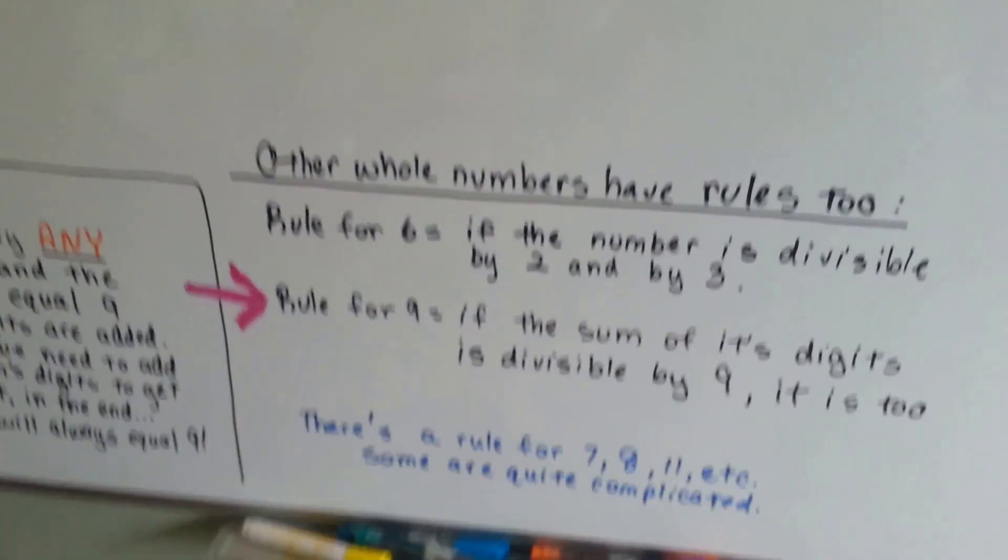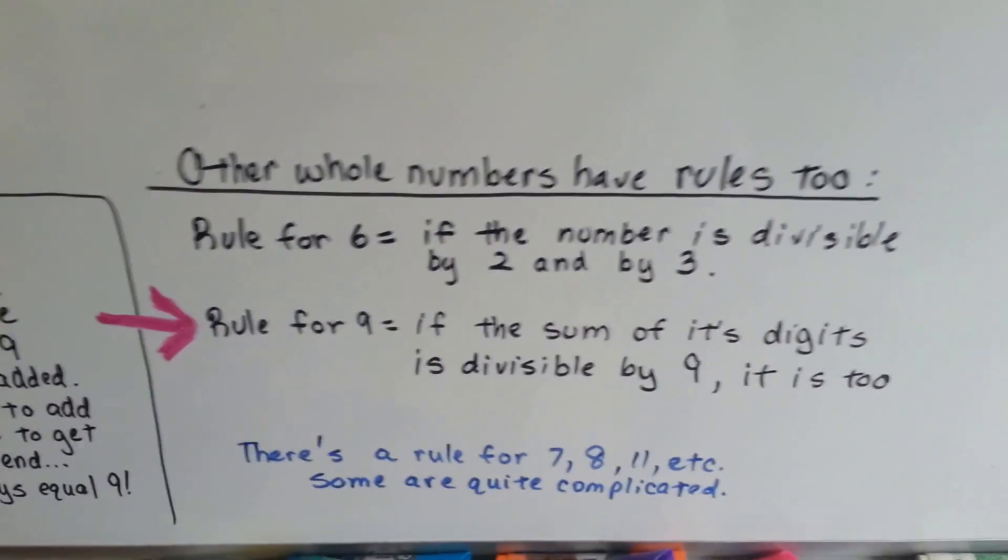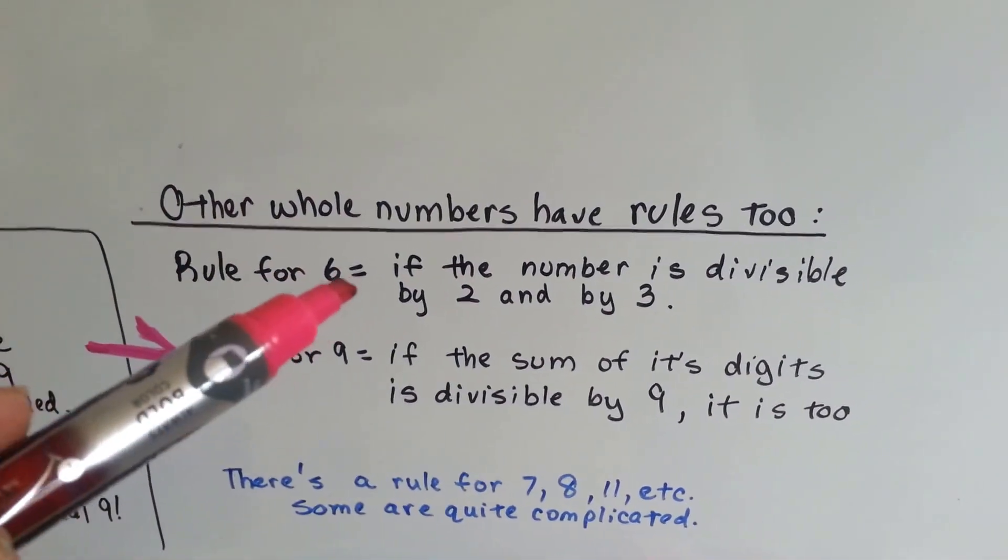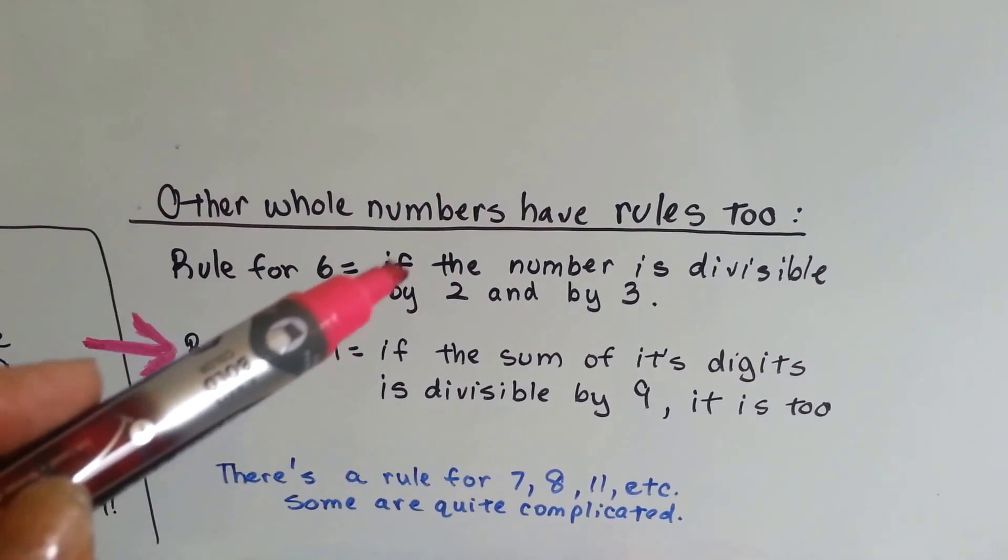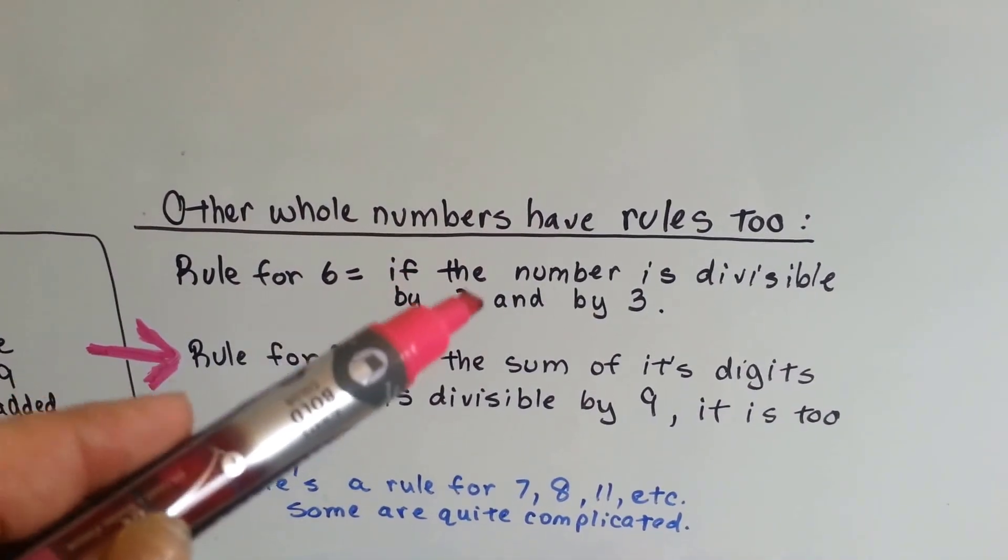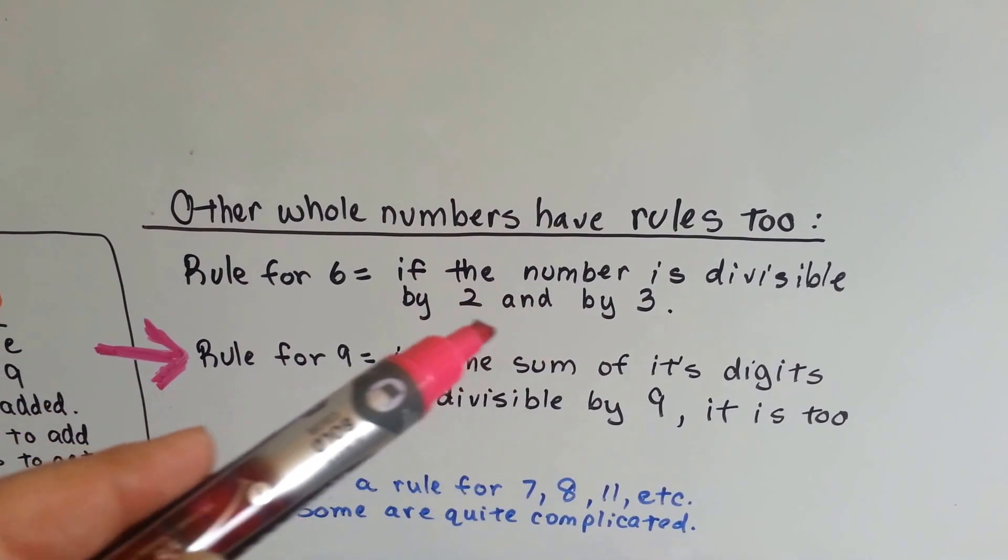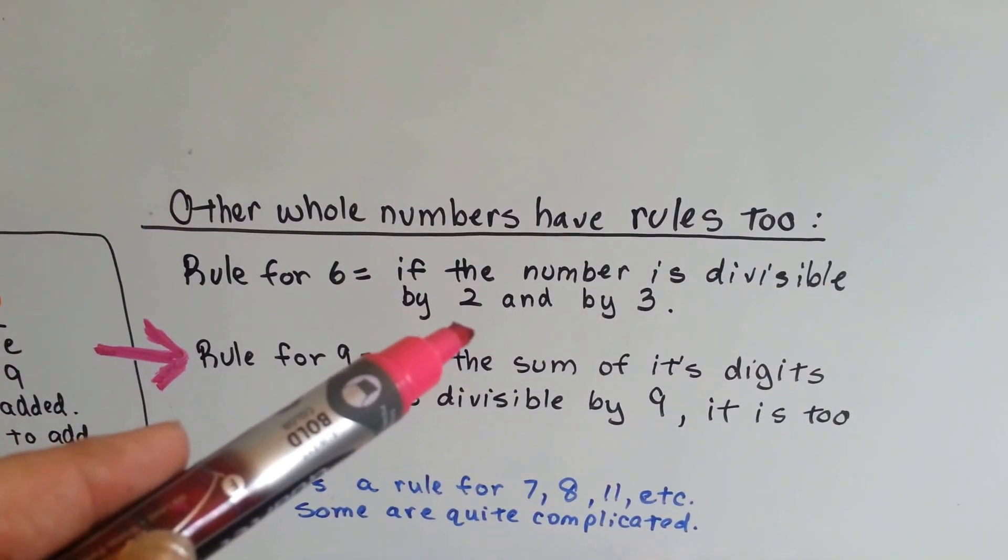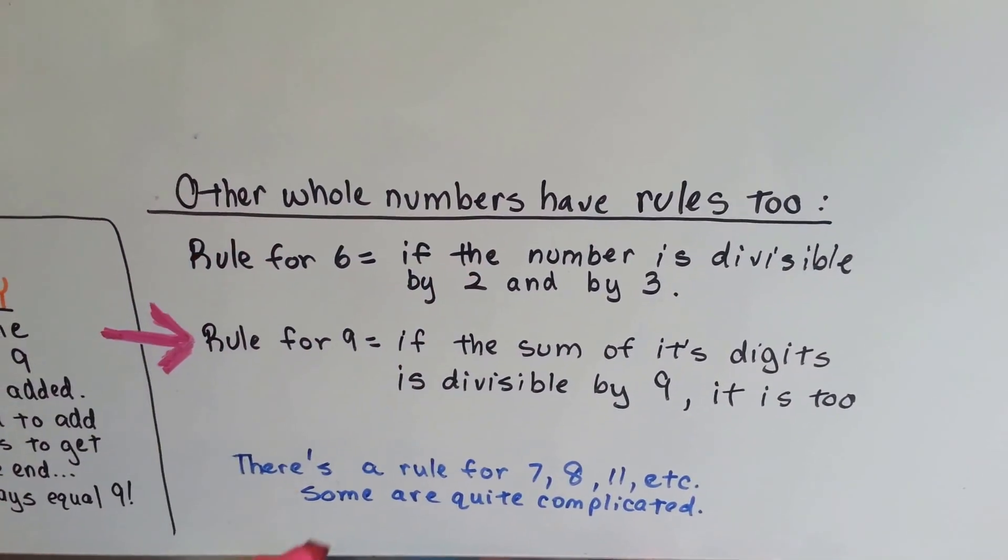So let me show you. There are other whole numbers that have rules too. The rule for 6 is it's divisible by 6 if the number is divisible by 2 and by 3, not or. If it's divisible by both the 2 and the 3, then it's divisible by 6.